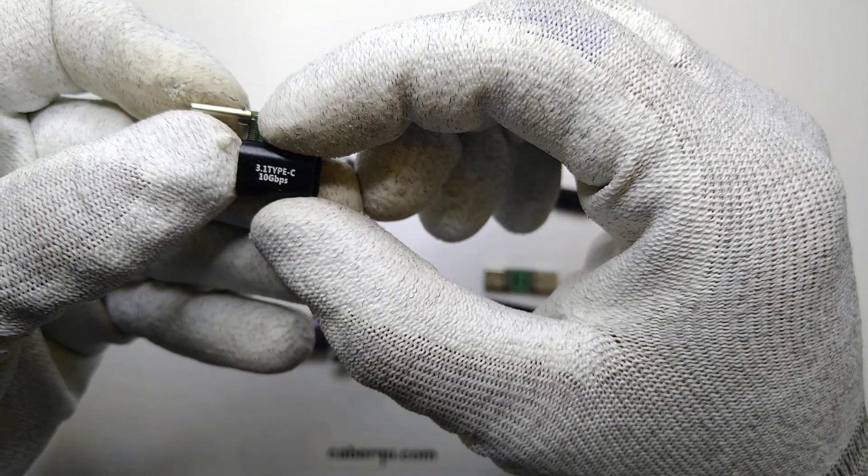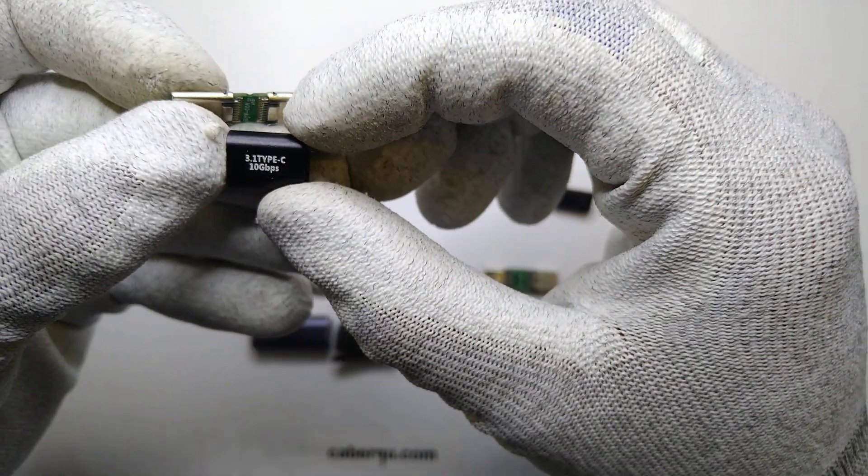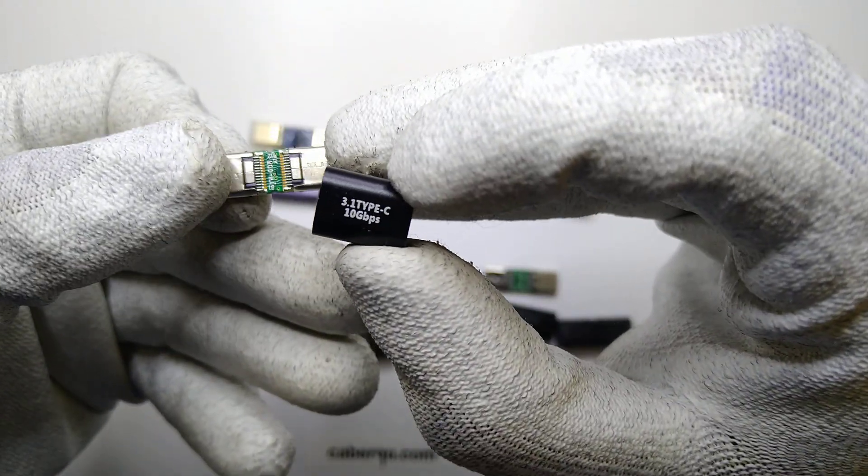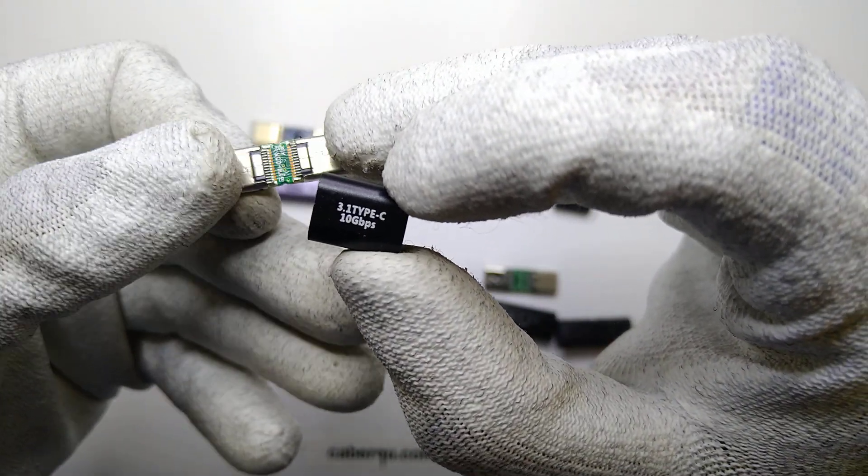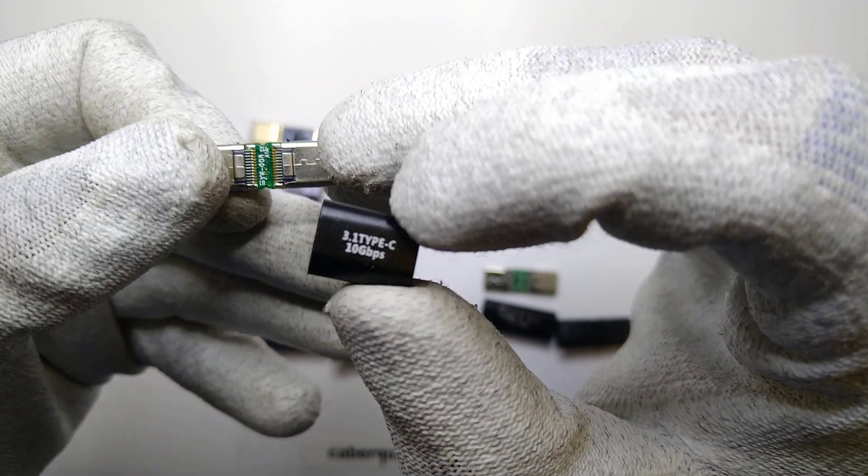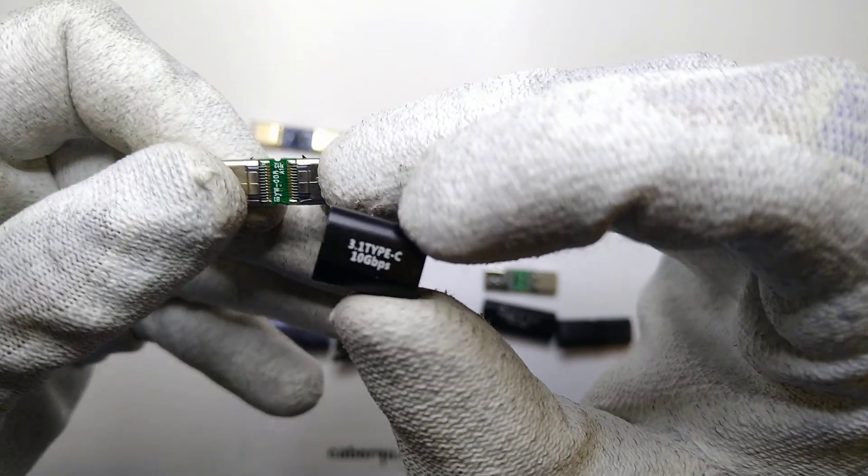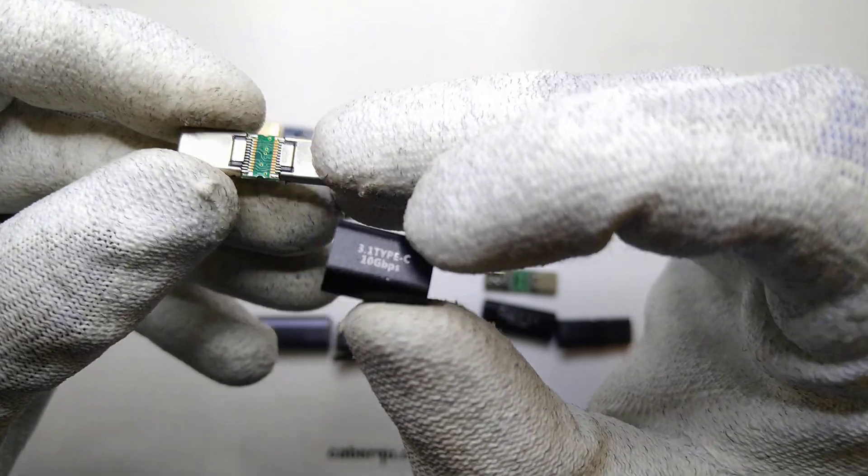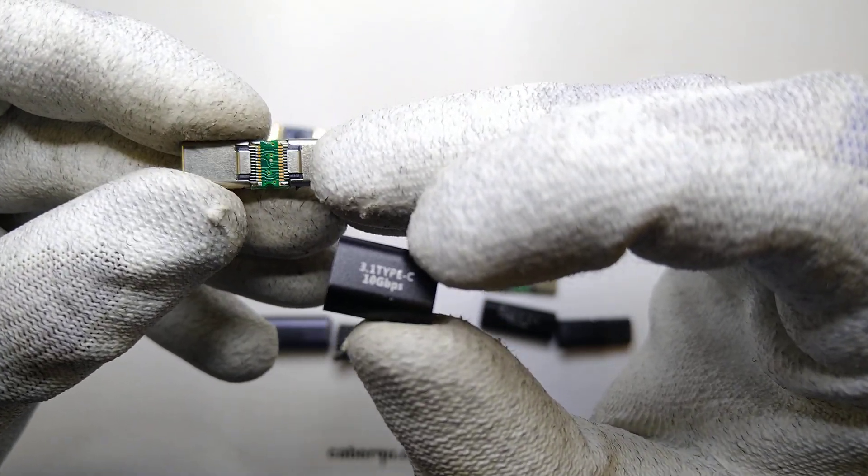So this connector on the shell actually says, let me take a look, that it's a 3.1 Type-C 10 gigabits per second. So that's USB 3.1 with a maximum data rate of 10 gigabits per second. This means that at least one of the RX-TX or RX1-TX1, RX2-TX2 pairs should be connected.